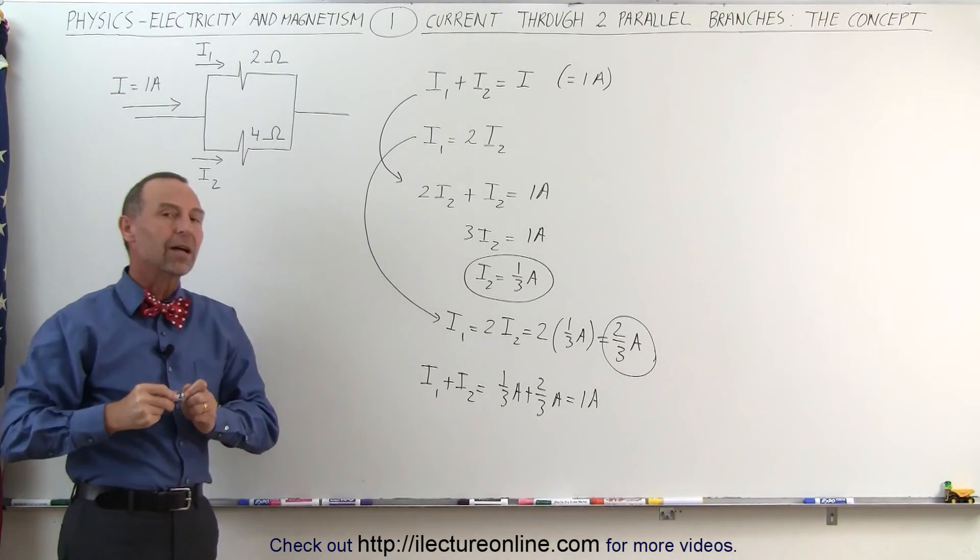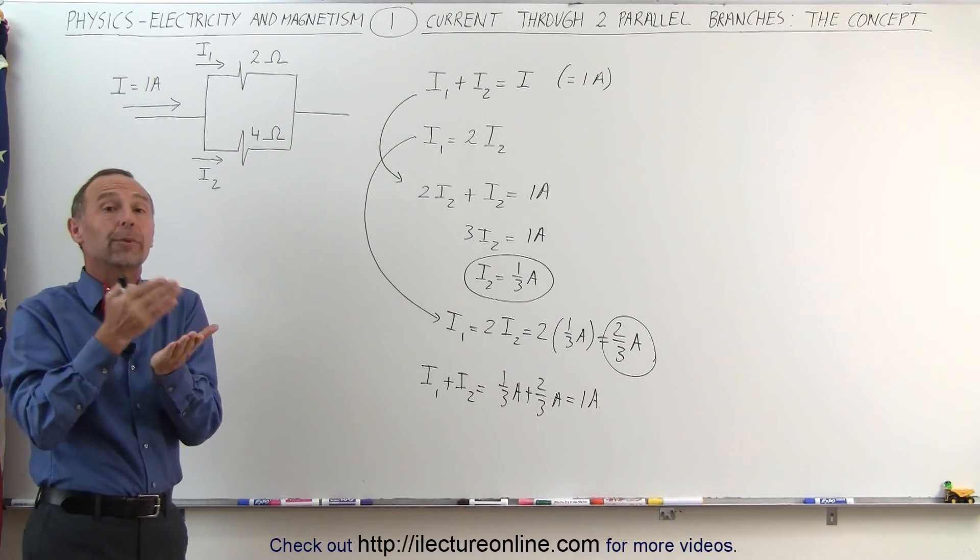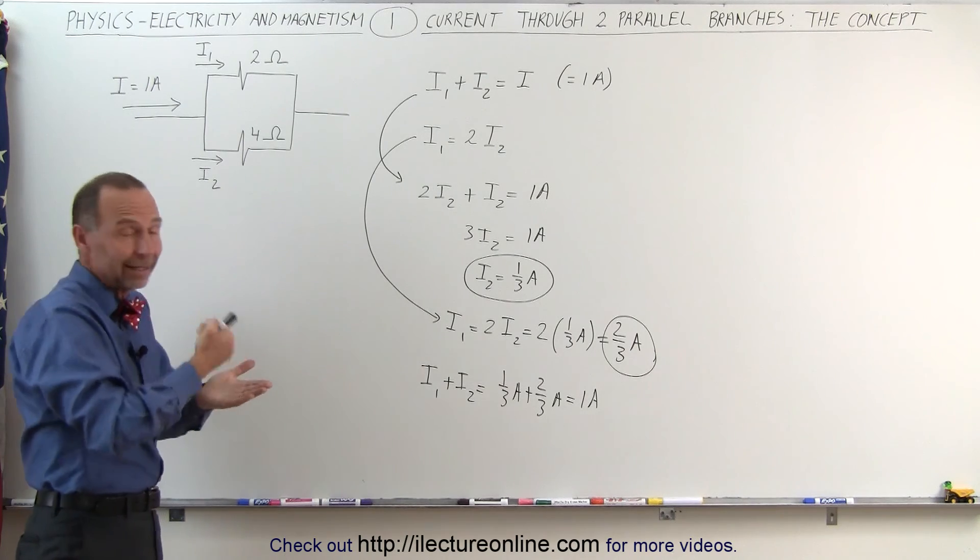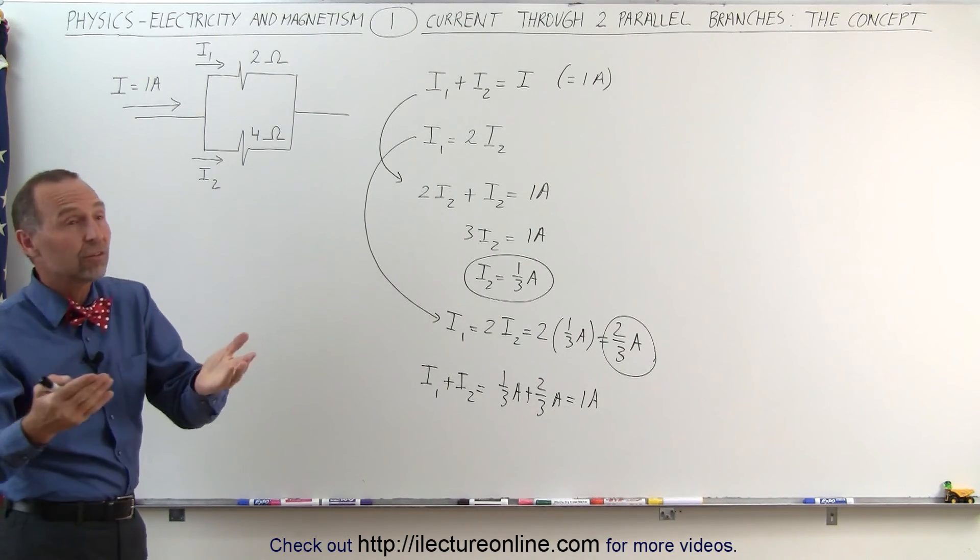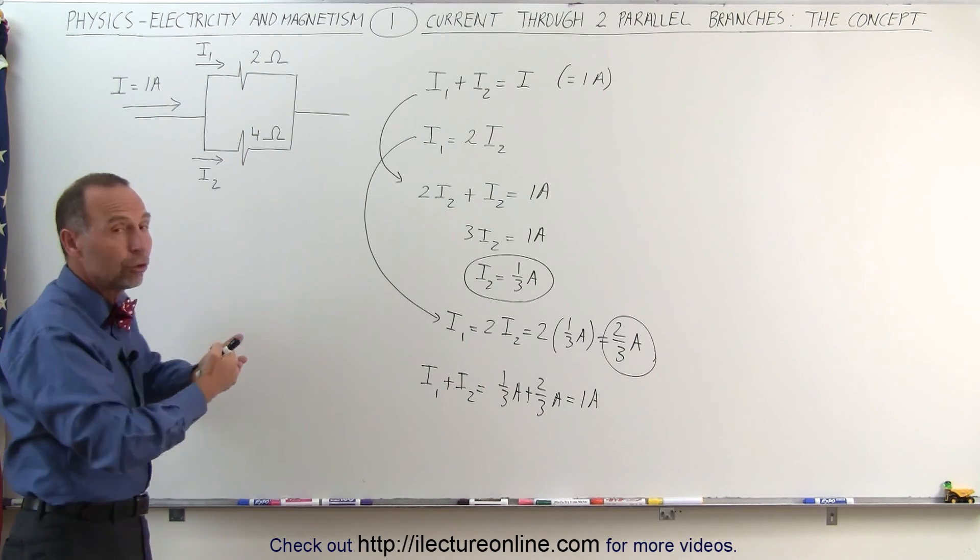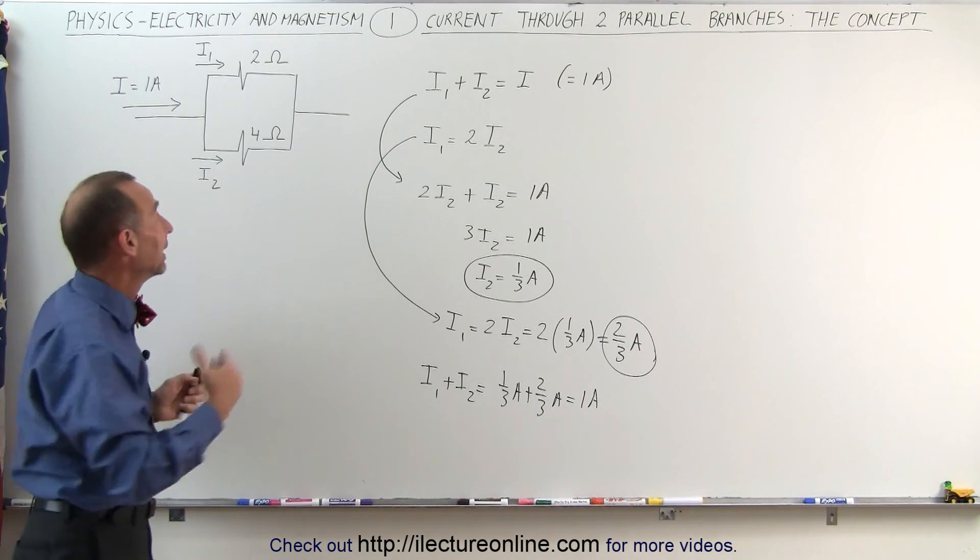So that's the concept. You can see that more current will flow to the branch that has less resistance, less current will flow to the branch that has more resistance, and it will be inversely proportional to the resistance relative to one another.